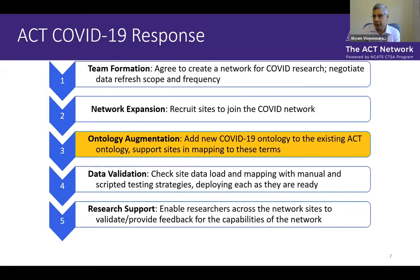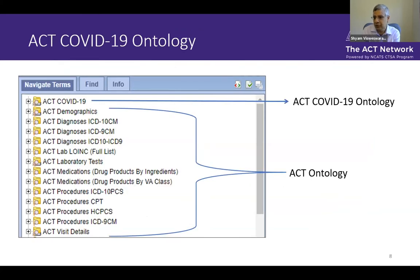More than a year ago, when the pandemic started, the ACT network worked together to essentially put together a response. These are some of the steps we went through to enable the ACT network to be usable for COVID research. One component of this was the ontology augmentation — adding a new COVID-19 ontology to the existing ontology. This was initially deployed across about 10 sites and has now been rolled out to the entire ACT network.